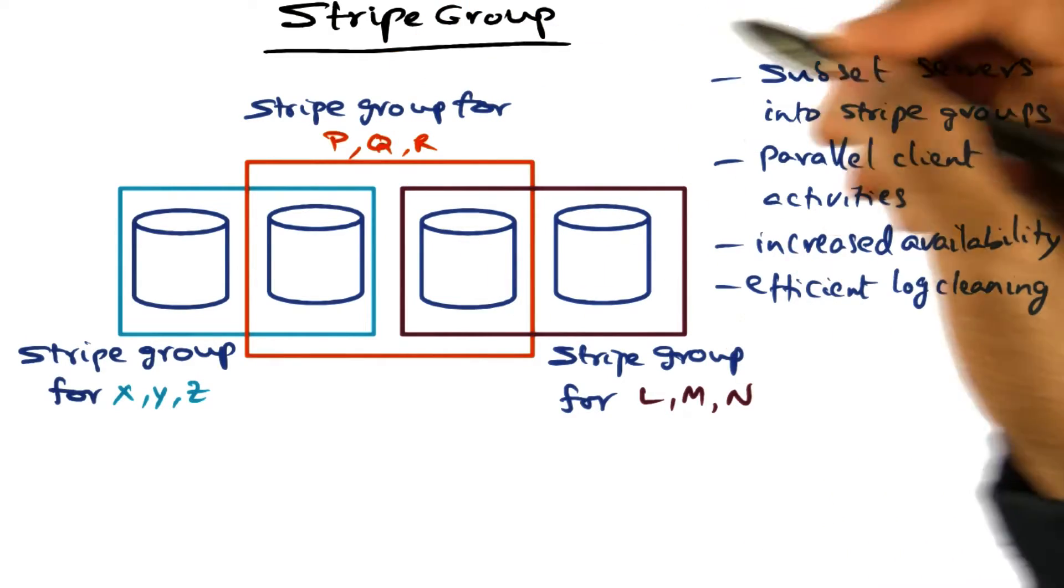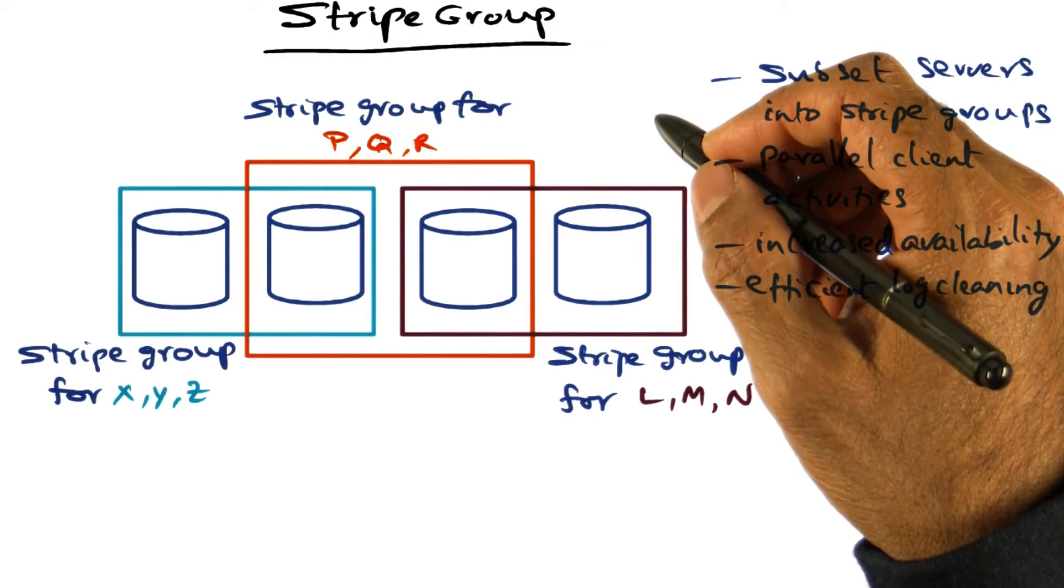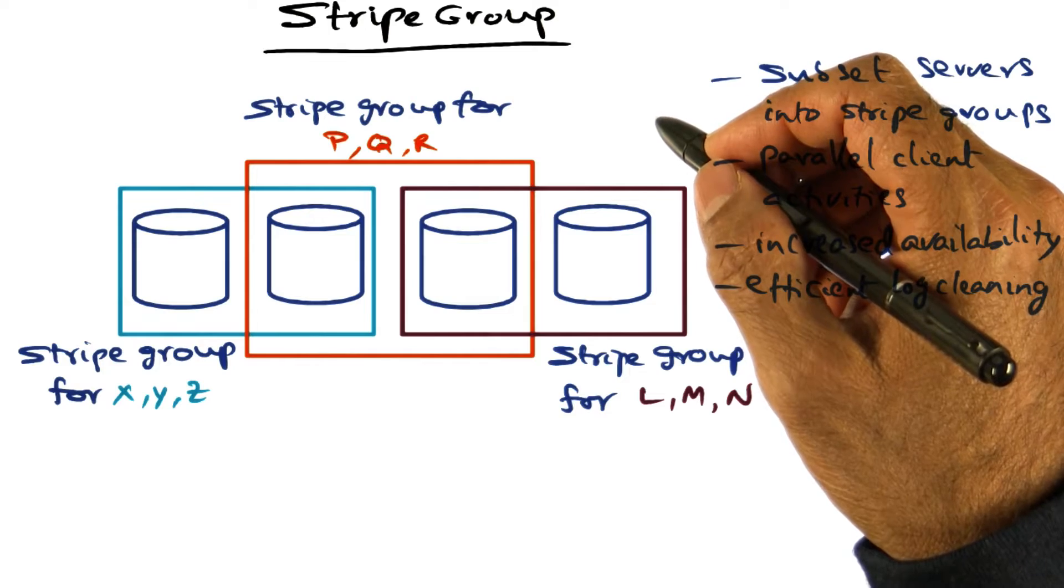So using a stripe group for a log segment avoids, first of all, the small write pitfall.